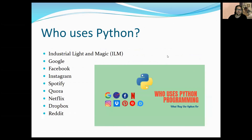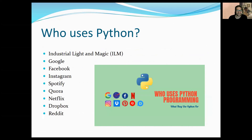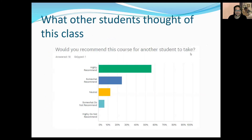So who uses Python? These are all the industries that right now are using Python as their primary coding language — Google, Facebook, Instagram, Spotify, Netflix, Dropbox, Reddit. Python is a large primary language that a lot of companies are using. Once you learn the fundamentals, it's not too hard to transition to Java or other types of engineering programs. Python is a pretty great one just to get your feet wet.